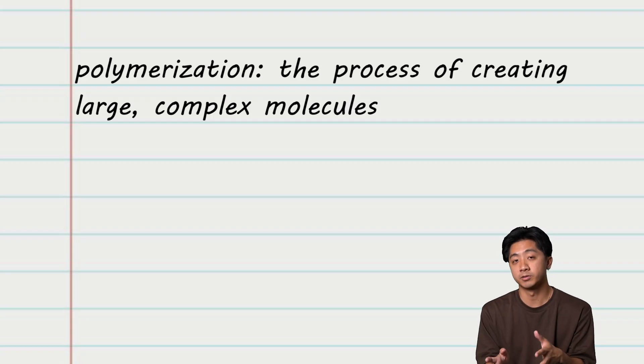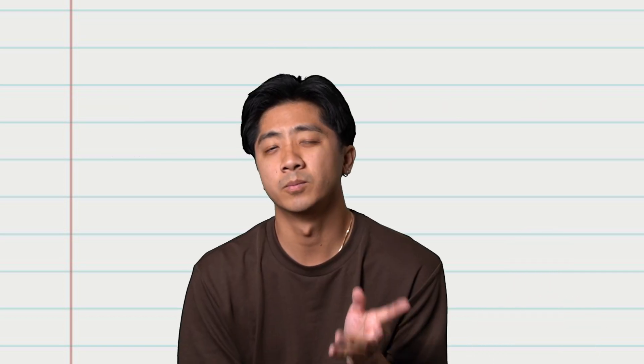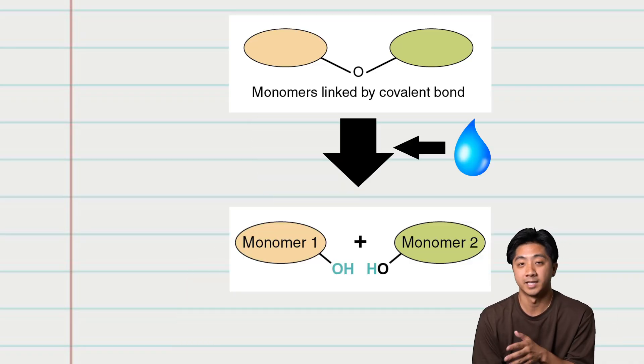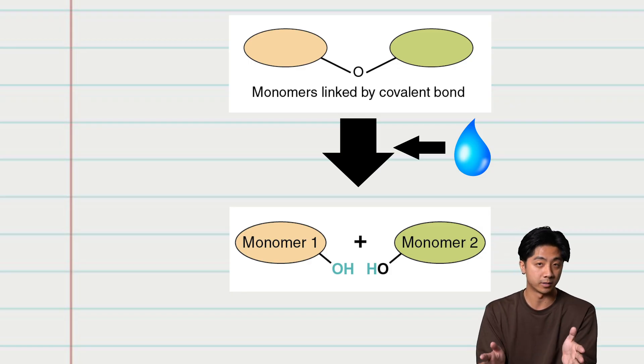Hydrolysis is a process in which water is used to break a covalent bond. So basically the opposite of dehydration synthesis. Hydro means water and lysis means to cut. So hydrolysis means using water to cut something apart, for example, separating two monomers.